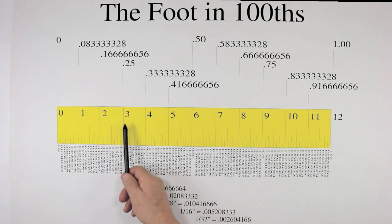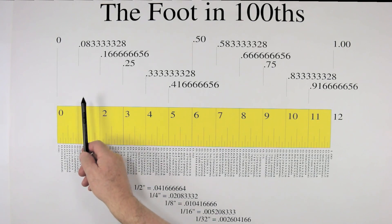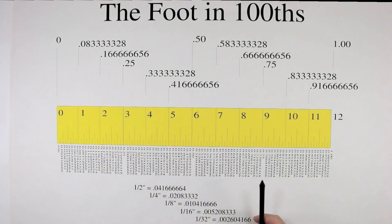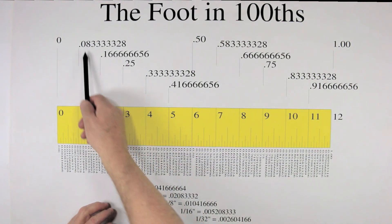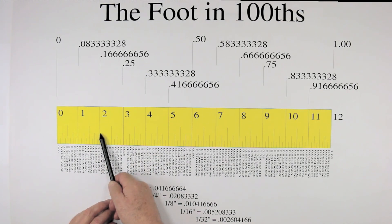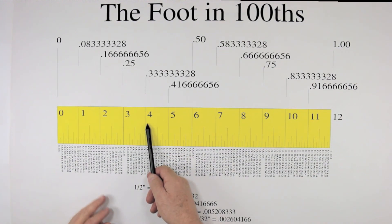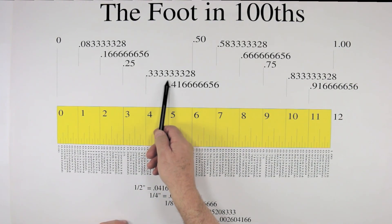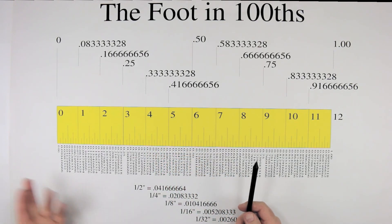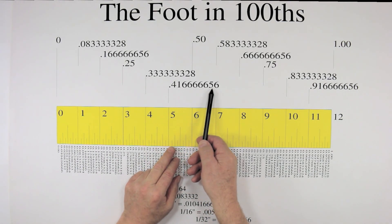The next step is to take three inches, or 0.25, and divide that by three. We get one inch at 0.083333. If we take that number and times it by two, we get two inches at 0.166666. Three inches is 0.25. We add one inch to three inches and we get four inches at 0.333333. We add one inch to four and we get five inches at 0.416666.